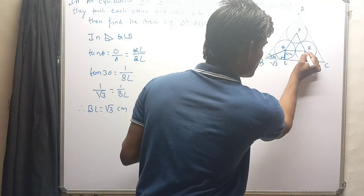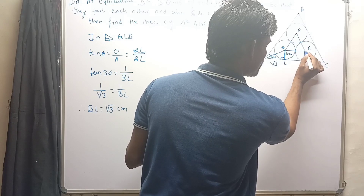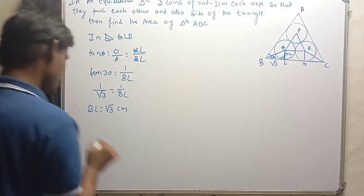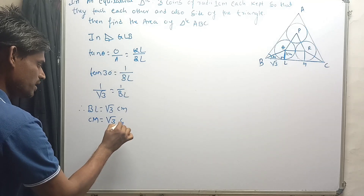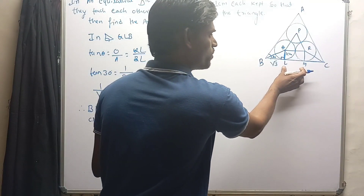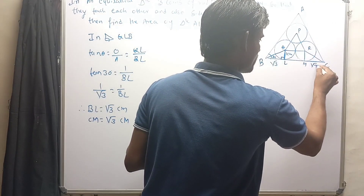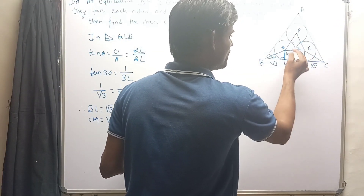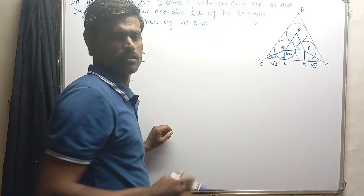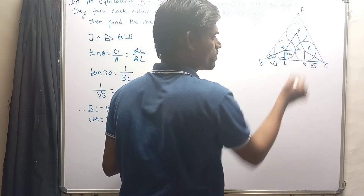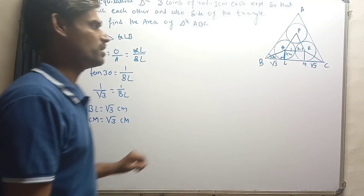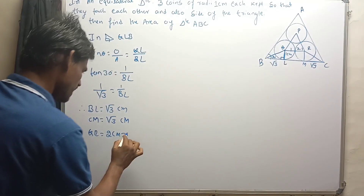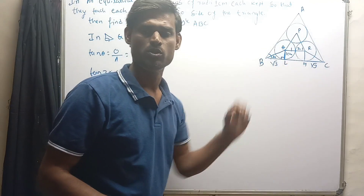Similarly, let's draw a radius from the circle at the other corner with an angle bisector to point M. We can similarly prove that CM is also √3 centimeters. Now let's find the length of LM. Let the point of tangency between the two adjacent circles be Z. Each circle has a radius of 1 centimeter, so QZ = 1 centimeter and ZR = 1 centimeter, making QR = 2 centimeters, which equals LM. So the length of LM is also 2 centimeters.